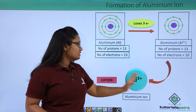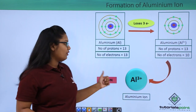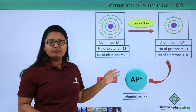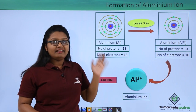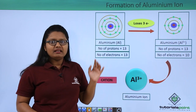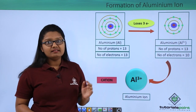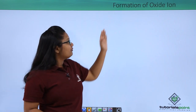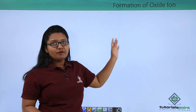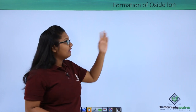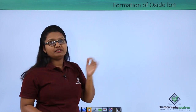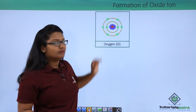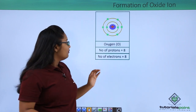These three extra protons give it a charge of plus three, and this positively charged aluminium atom is called the aluminium ion — a cation. This was all about metallic ions which are cations. Now let us look at some non-metallic ions which are anions, starting with the formation of the oxide ion from an oxygen atom.